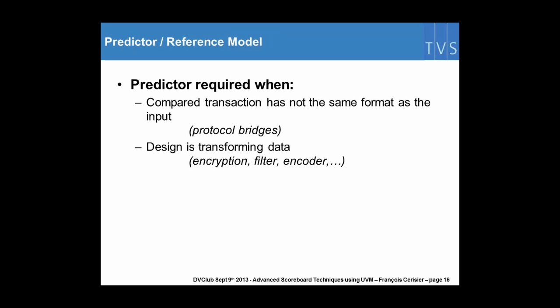About the predictor. The predictor is needed whenever the transaction that you want to compare has not the same value or has not the same format as the transaction that has entered the scoreboard in the first instance. In terms of protocol bridges, you will need a predictor. If you have a design which transforms the data, like an encryption engine, video encoder, whatever, you will need a predictor.